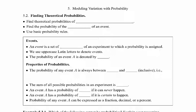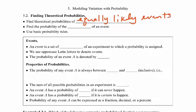Our objectives here: find the theoretical probabilities of equally likely events, find the probability of the complement of an event, and use some basic probability rules.